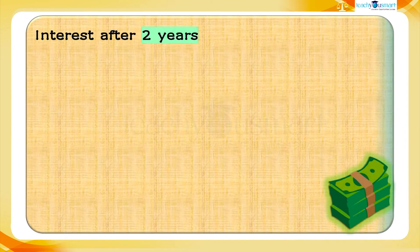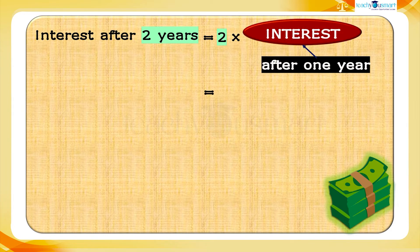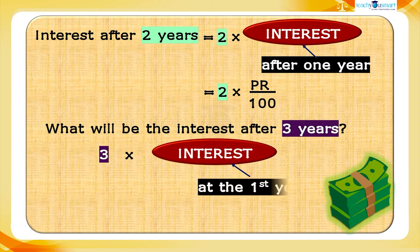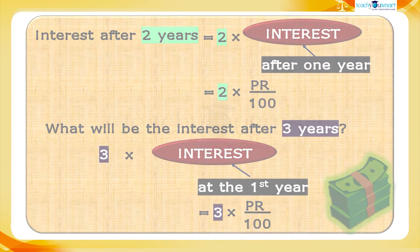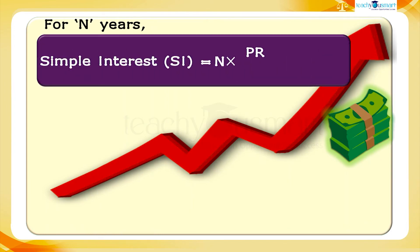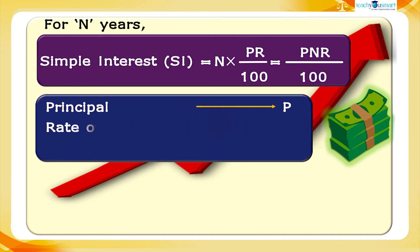In the above problem, the interest after two years is two times the interest of the first year, that is 2 multiplied by PR divided by 100. Then what will be the interest after three years? Of course, three times the interest of the first year, that is 3 multiplied by PR divided by 100. So for N years, simple interest SI equals N multiplied by PR divided by 100, which equals PNR divided by 100, where P is the principal, R is the rate of interest, and N is the number of years.